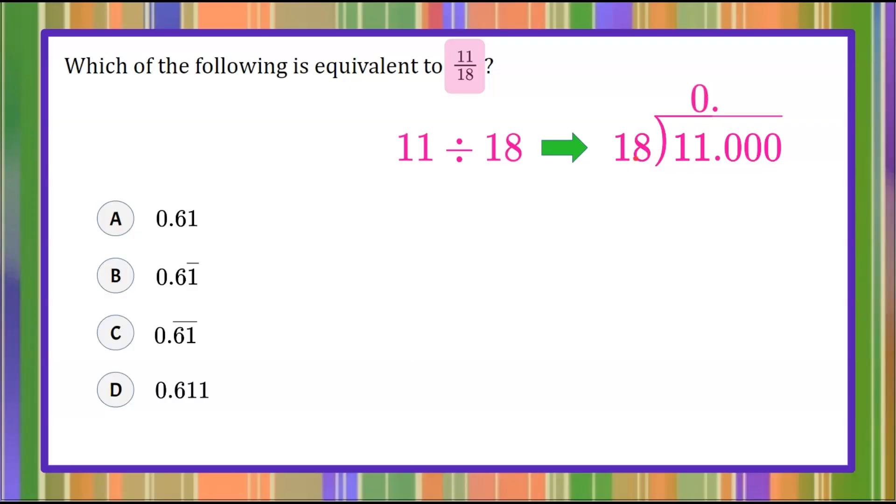So now we're going to determine how many times the value 18 goes into 110. So that is 6. 6 times 18 is 108. 110 subtract 108 is 2. We're going to bring down the zero, and we have 20.